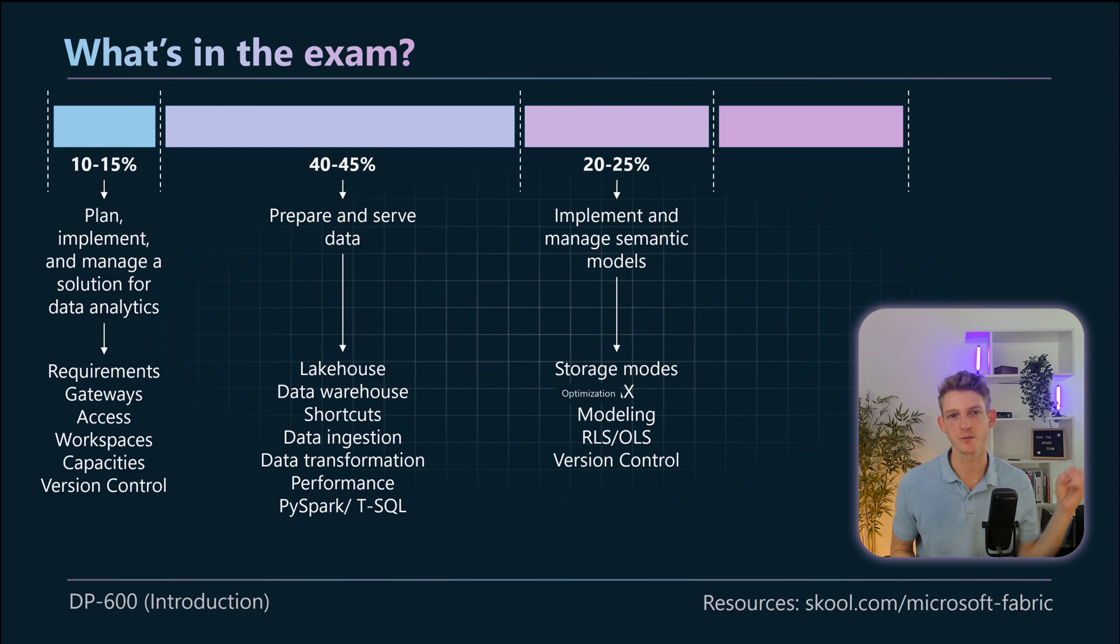Also within this section you've got data modeling so things like star schemas, bridge tables, how do we deal with many-to-many relationships, and also we've got things around security, how do we set up row level security within your semantic model, object level security and how do we validate that that's actually working correctly.